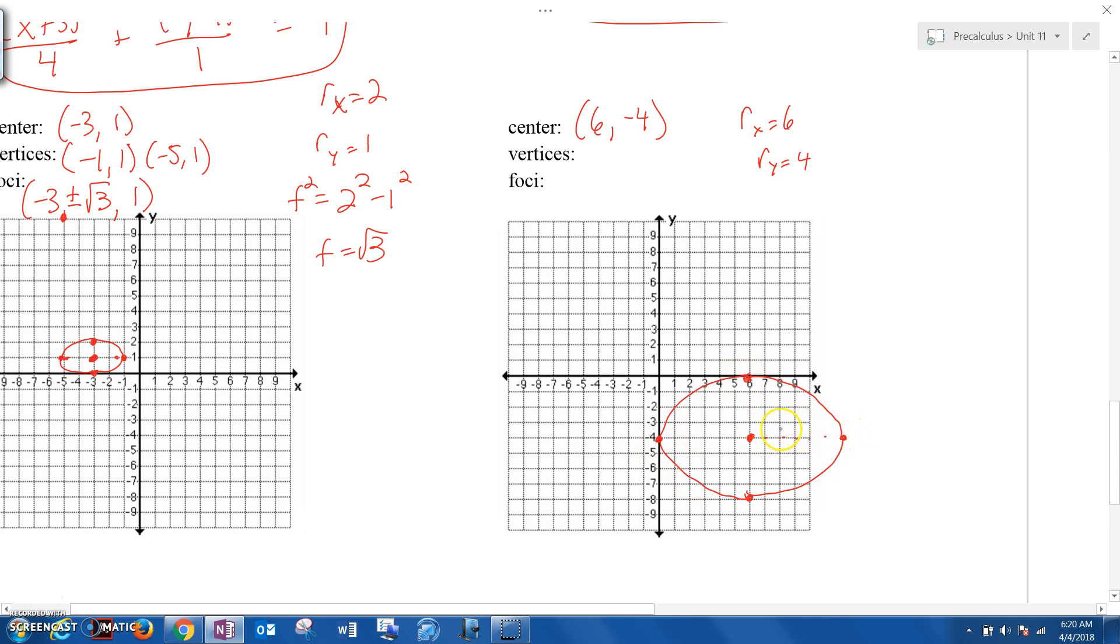My vertices, this goes 2 past, so it's (12, -4) and (0, -4). My focal length is 36 minus 16. f² equals that, because it's 6² minus 4². That is 20. So f is equal to square root of 20. So that means that I'm moving that way in the x. So my x is at 6. So it's 6 plus or minus root 20, comma, -4. Okay. So those would be my focal points, my foci. And if you want to plot those, root 20 is more than 4. 1, 2, 3, 4, but less than 5, so it's like right there. 1, 2, 3, 4, so right there.